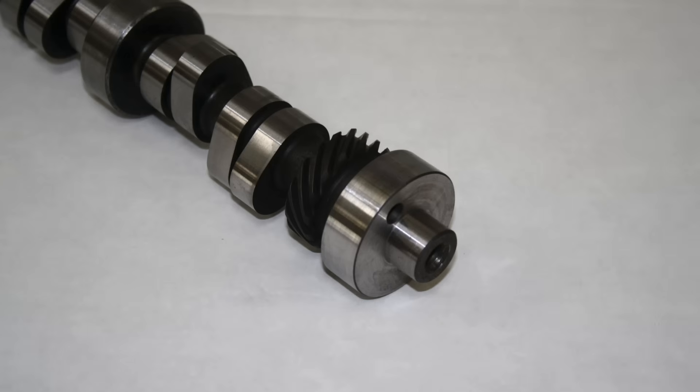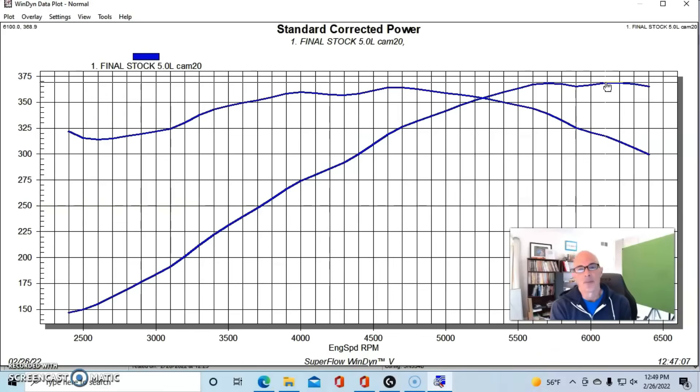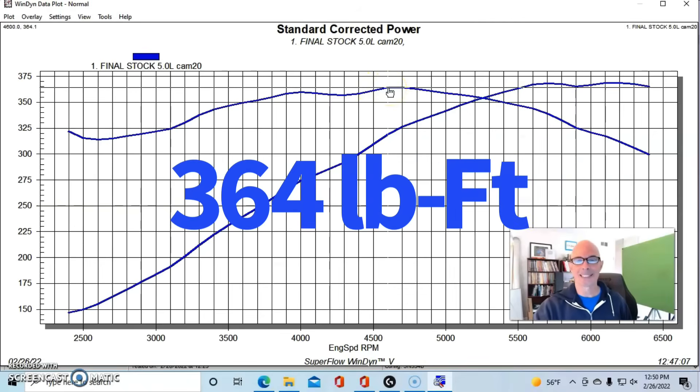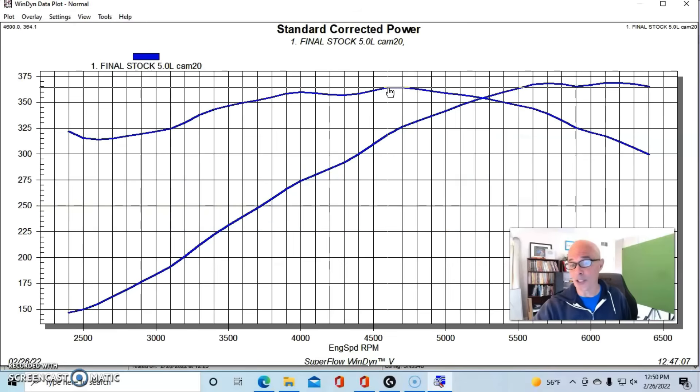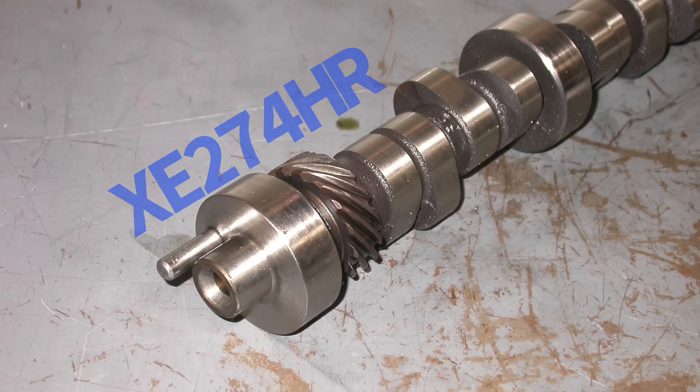Equipped with a stock camshaft, our modified combination produced 368 to 369 horsepower and 364 foot-pounds of torque. So the combination did very well, even with the stock camshaft. This thing would idle nice and drive around because it has a stock camshaft in it. But here's what happened when we installed our 274 Xtreme Energy cam.